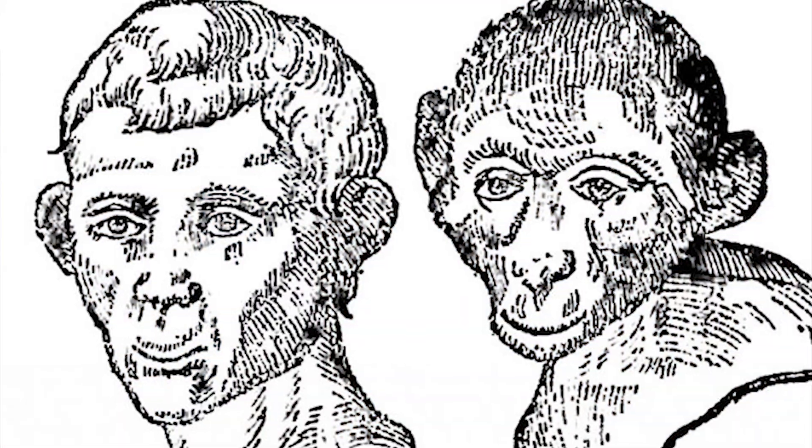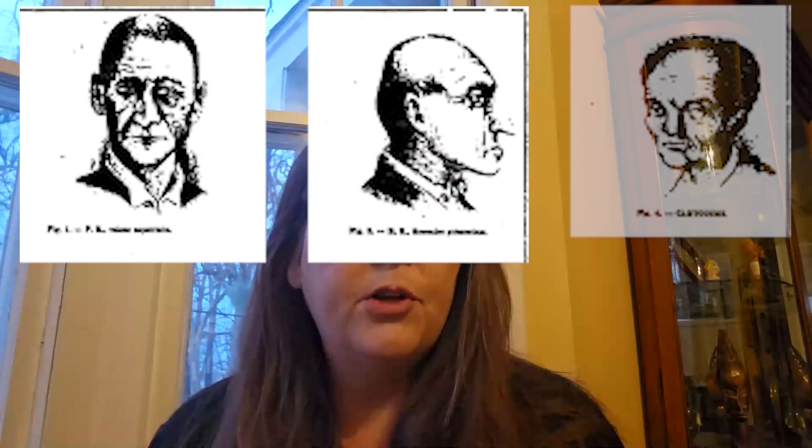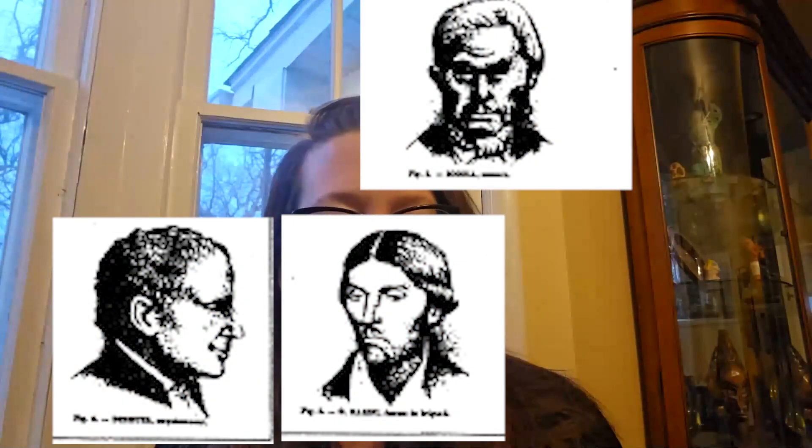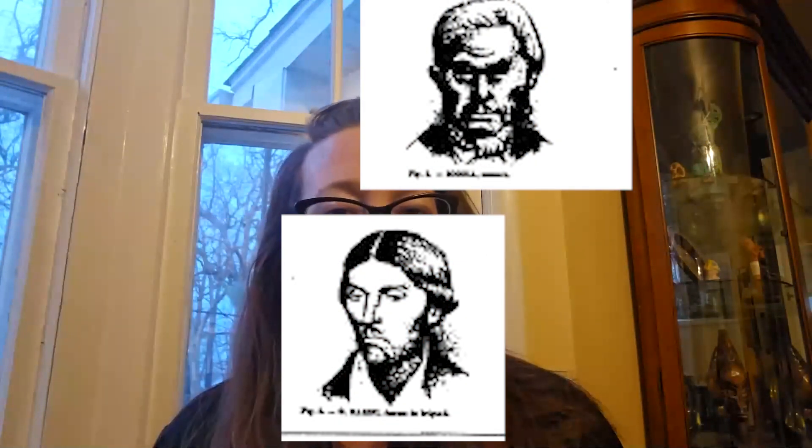These stigmata included characteristics like unusually large or small ears, peculiarities in eye size, asymmetry of the face, or excessive wrinkles. Lombroso believed these features were not just physical anomalies, but indicators of a deeper, inherent criminal nature.